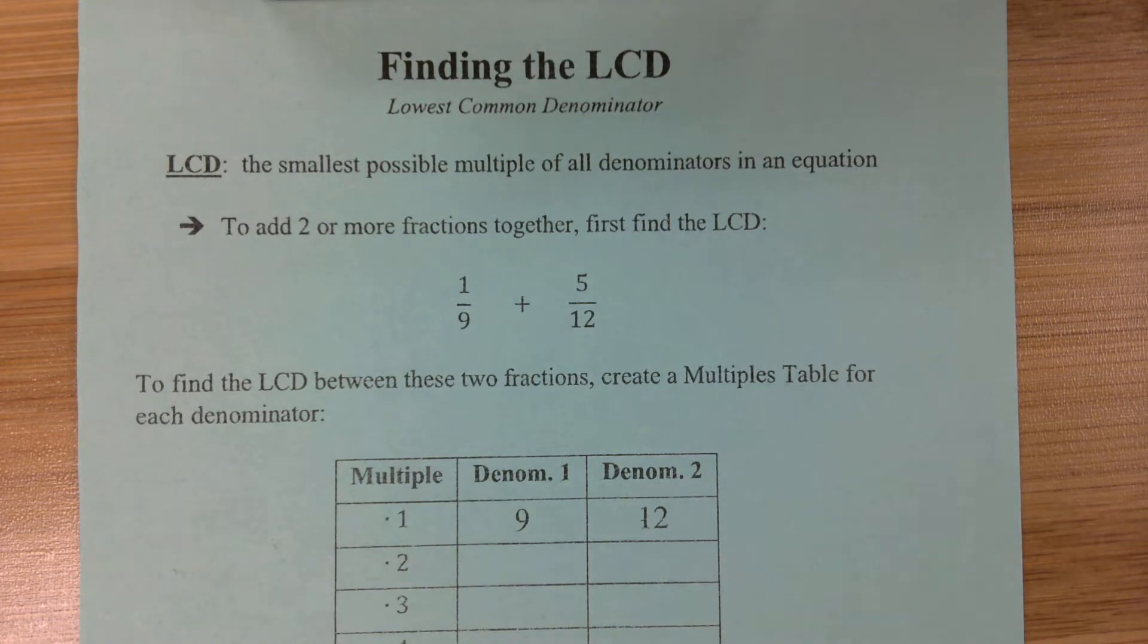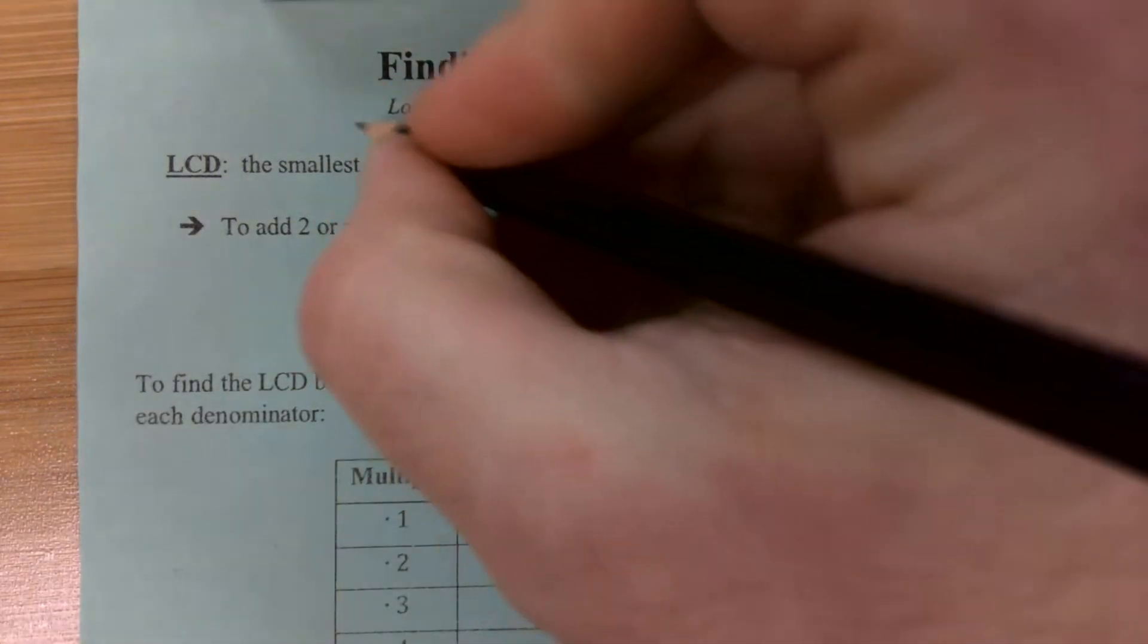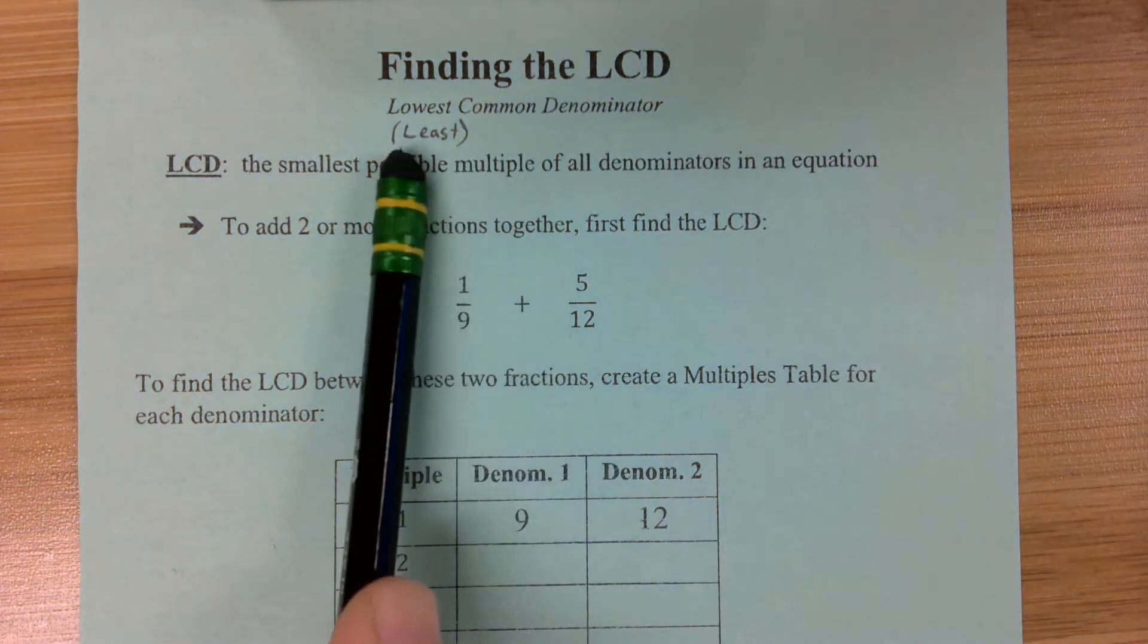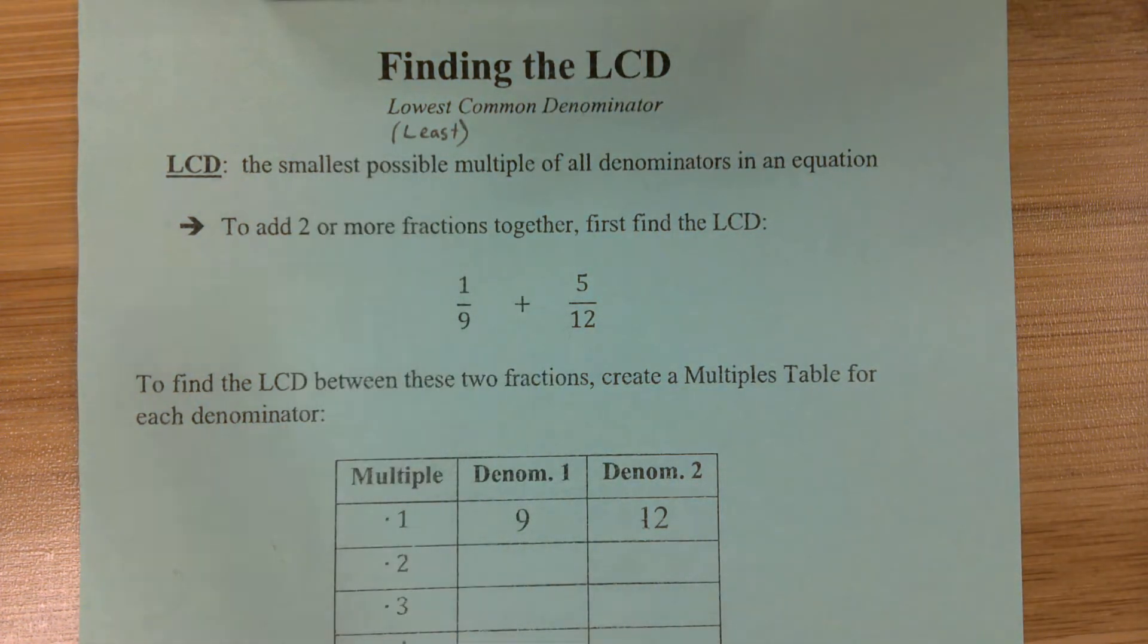Least Common Denominator, also known as the lowest common denominator. It's the same thing. You can write least underneath lowest if you'd like, they're the same.